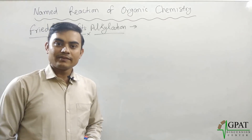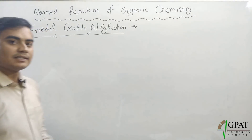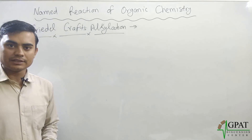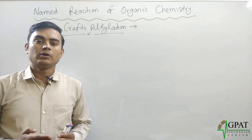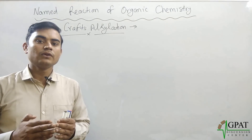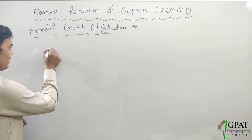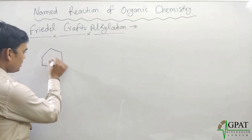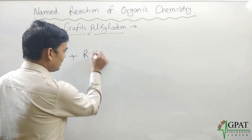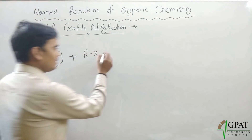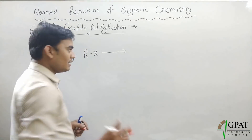In the sequence of named reactions in organic chemistry, today I'm going to discuss the next named reaction: Friedel-Crafts alkylation. Friedel-Crafts alkylation is simply adding an alkyl group onto benzene in the presence of a Lewis acid. When benzene reacts with an alkyl halide, the reaction takes place in the presence of a Lewis acid.